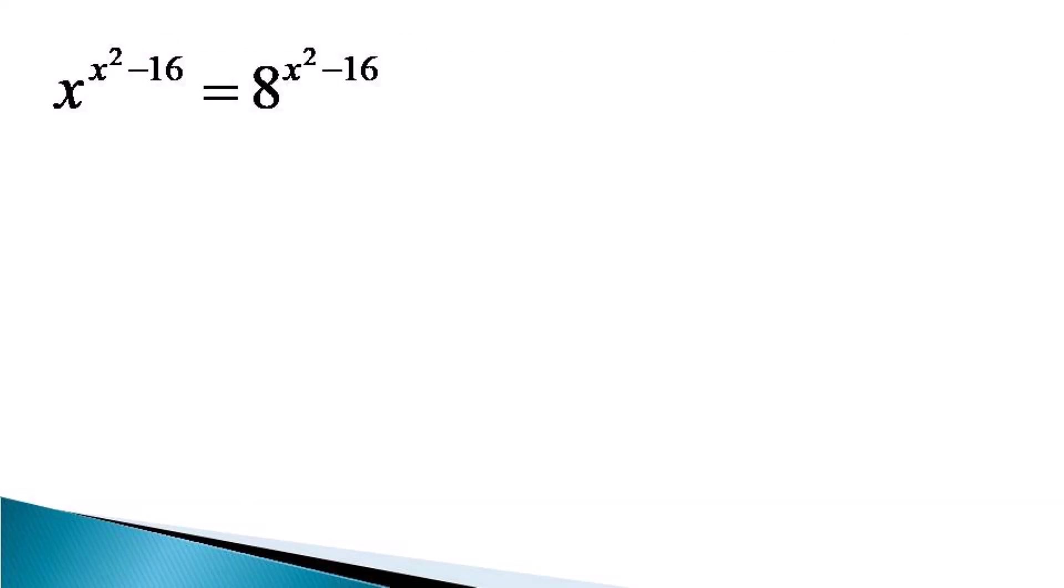We write this equation as x raised to the power x square minus 16 is equal to 8 raised to the power x square minus 16. This equation is of the form a raised to the power n is equal to b raised to the power n.